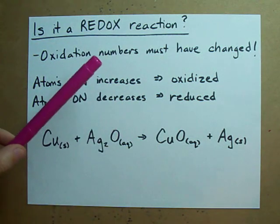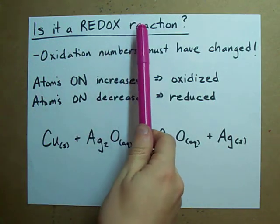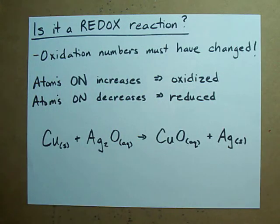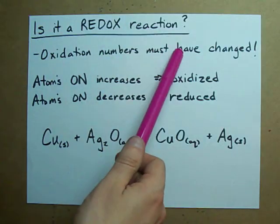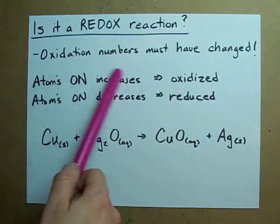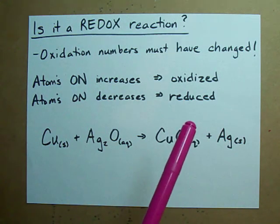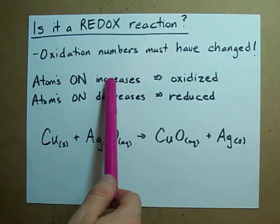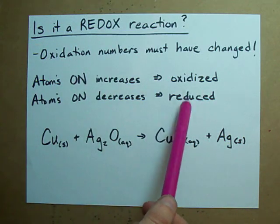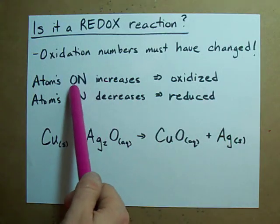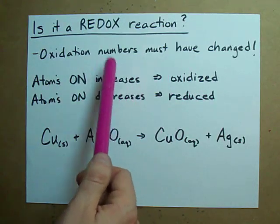How can you tell if a redox reaction occurred? If it's a redox reaction, the oxidation numbers must have changed. If the oxidation numbers didn't change, it wasn't a redox reaction. If an atom's oxidation number increases, it got oxidized, and if the oxidation number decreases, it got reduced. That's intuitive — it wouldn't be called the oxidation number if oxidizing it didn't increase that number.